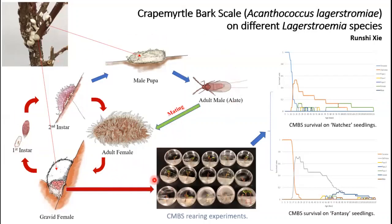The life history data was then analyzed to generate results in terms of biological parameters, such as the stage-specific survival rate of these insects on different host plants. As you can see in the graph here, the survival curves of these scale insects are actually quite different on different microstromia species or cultivars.